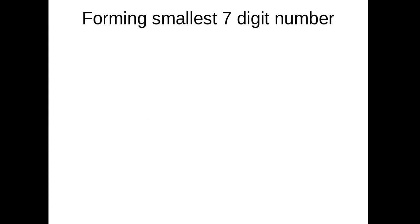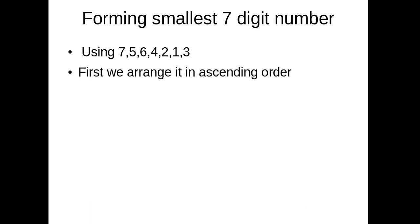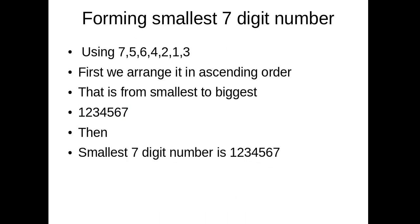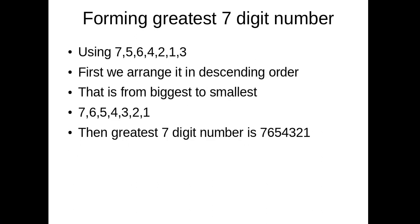Now we are going to form the smallest seven-digit number using digits 7, 5, 6, 4, 3, 2, 1. First we arrange them in ascending order, from smallest to biggest: 1, 2, 3, 4, 5, 6, 7 — that forms the smallest seven-digit number: 1,234,567. Then, forming the greatest seven-digit number using 5, 7, 5, 6, 4, 2, 1, 3 — we arrange in descending order, from biggest to smallest: 7, 6, 5, 4, 3, 2, 1 — so the greatest seven-digit number is 7,654,321.